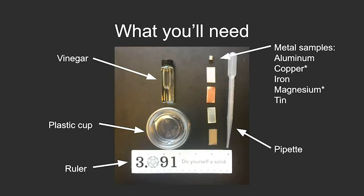To do this goodie bag, you'll need vinegar, a plastic cup, a ruler, metal samples of aluminum, copper, iron, magnesium, and tin, but if you can only get copper and magnesium it will work, and a pipette.